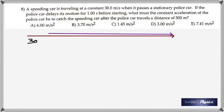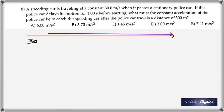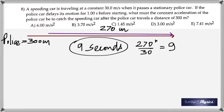Number 8: a speeding car travels at 30 m/s and passes a stationary police car. The police car delays 1 second before starting. The police car must travel 300 meters total to catch it. In that 1-second delay, the speeding car moves 30 meters ahead, so the police car needs only 300 − 30 = 270 meters. Time for police car = 270 ÷ 30 = 9 seconds.